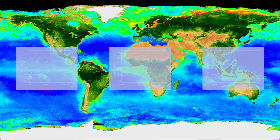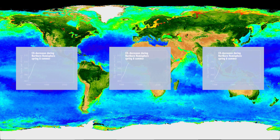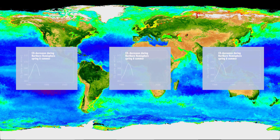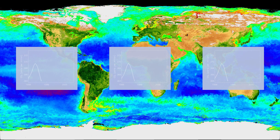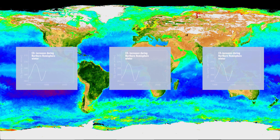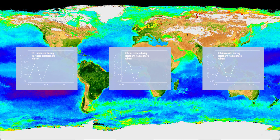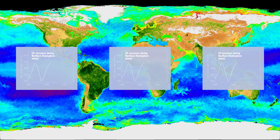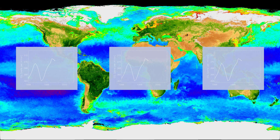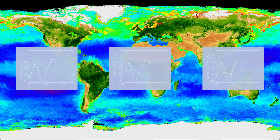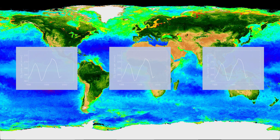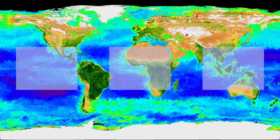The Mauna Loa CO2 curve goes down in the Northern Hemisphere spring and summer, when a vast abundance of plant life is using carbon dioxide in photosynthesis, and the curve goes up in winter, when many plants are dormant and no longer photosynthesizing, but animals are still exhaling CO2.